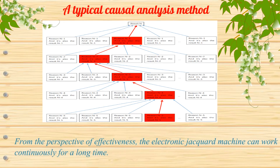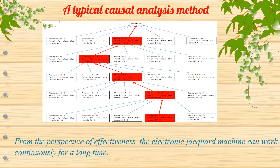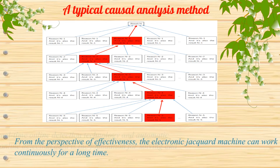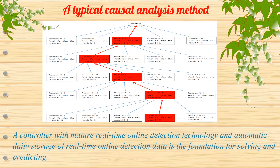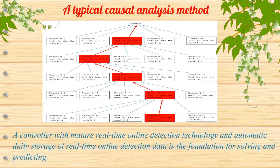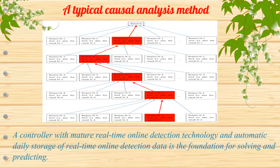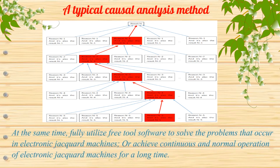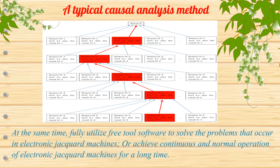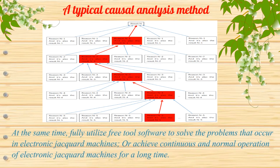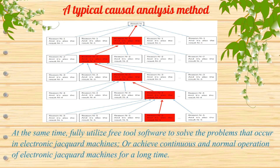From the perspective of effectiveness, the electronic jacquard machine can work continuously for a long time. A controller with mature real-time online detection technology and automatic daily storage of real-time online detection data is the foundation for solving and predicting. Fully utilize free tool software to solve problems or achieve continuous and normal operation of electronic jacquard machines for a long time.